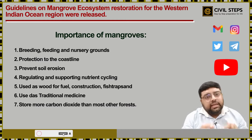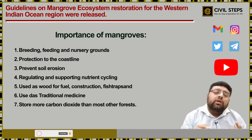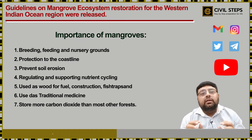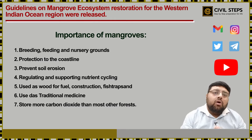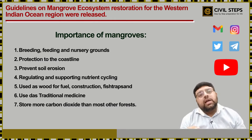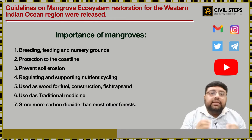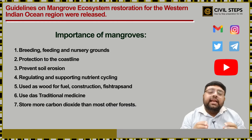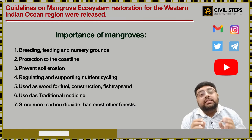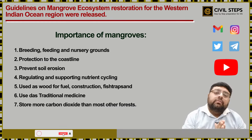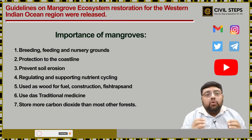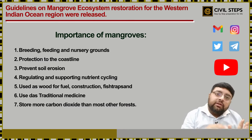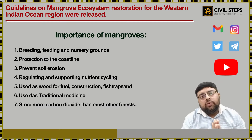Mangroves are also used as wood for fuel, construction, fish traps, etc. They are used in traditional medicines to treat diseases like malaria, diarrhea, and snake bite. Mangroves also store more carbon dioxide than most other forests, which is another significant quality.